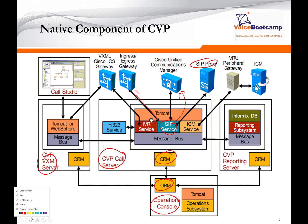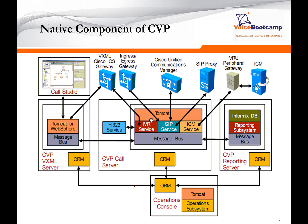The call server itself has three different services: IVR service, ICM service, and SIP service. The SIP service handles SIP communications. Whenever CVP needs to communicate with ICM or Contact Center Enterprise, it will use the ICM service for that. Whenever the call server needs to communicate with the VXML server or VXML gateway, it will use the IVR service for that.